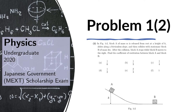Problem 2 of Part 1 reads as follows. In Figure 1-2, Block A of mass M is released from rest at a height H, slides along a frictionless slope, and then collides with stationary Block B of mass 3M. After the collision, Block A stops while Block B moves to the right. Find the coefficient of restitution between Block A and Block B.